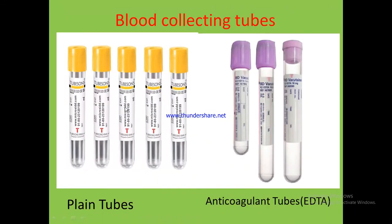Here are examples of tubes used in the laboratory. Yellow stopper tubes are plain tubes. Blue stopper tubes contain an anticoagulant like EDTA. So for hematology tests, blood should be collected into a blue stopper tube.